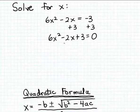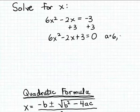Now to apply the quadratic formula, I need to identify the coefficients in the equation. The leading coefficient a is 6, the second coefficient b is negative 2, and the constant coefficient c is 3.